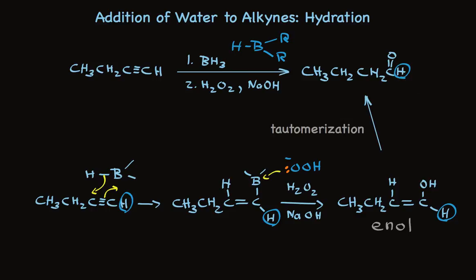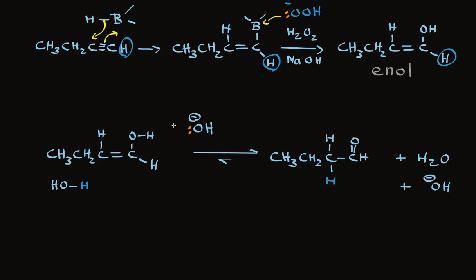Under basic conditions, the arrow pushing for the tautomerization equilibrium is a little different. You picture a hydroxide removed from this hydroxyl group. These electrons remaining to form the carbonyl double bond. And these pi electrons being protonated, taking a proton from water. That regenerates the hydroxide. So hydroxide is a true catalyst. And we're also regenerating water, so water isn't consumed either. This is simply a rearrangement. The hydration of alkynes using borane is essentially a way to make aldehydes.